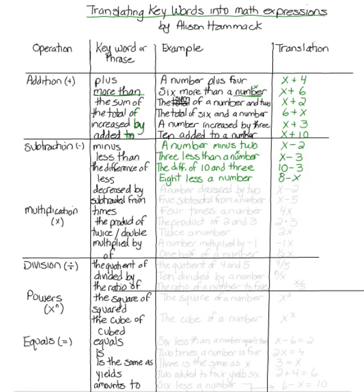Decreased by, if we have a number decreased by 2, we're going to write this as x minus 2. And then lastly, subtracted from, if we have 5 subtracted from the number, we are going to get x minus 5.